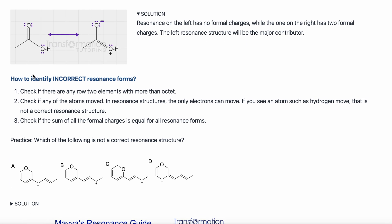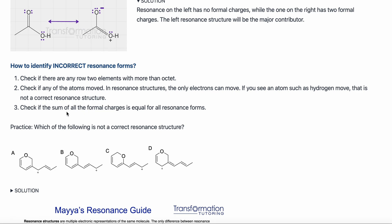Finally, I'm going to show you how to identify an incorrect resonance form. First, check if any second row elements have more than an octet — we cannot have more than an octet. Second, check if any atoms have moved, because in resonance structures the only thing that moves is electrons. Third, check if the sum of all formal charges is equal across all resonance forms. Here is a practice problem: which of the following is not a correct resonance structure?